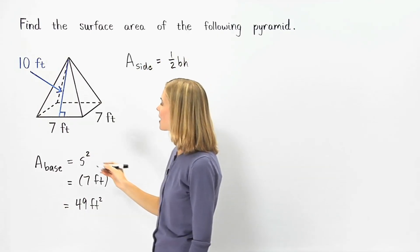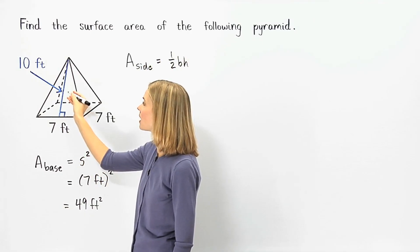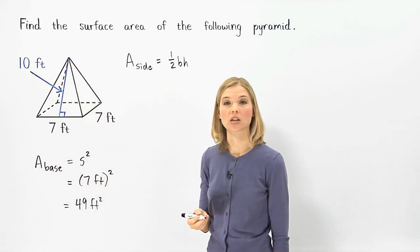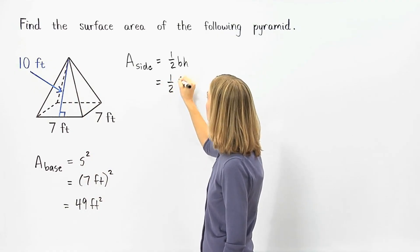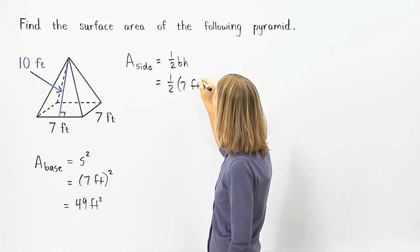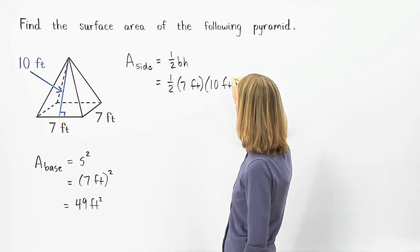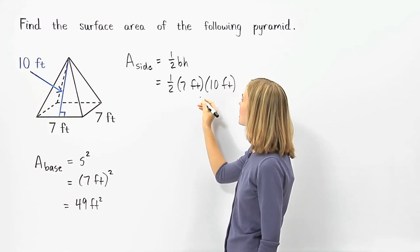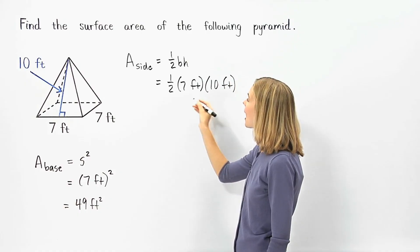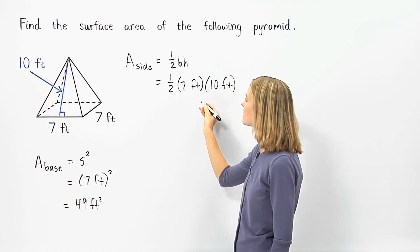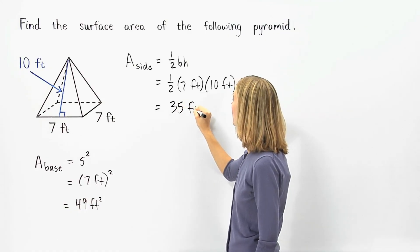Since each side has a base of 7 feet and a height of 10 feet, we can plug this into the formula to get 1 half times 7 feet times 10 feet. 7 feet times 10 feet is 70 feet squared, and 1 half times 70 feet squared is 35 feet squared.